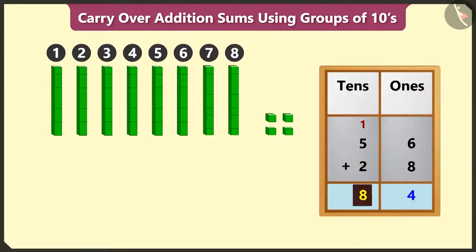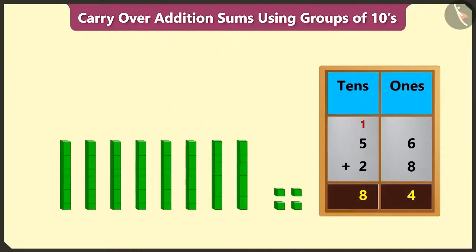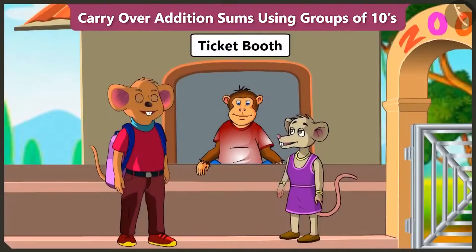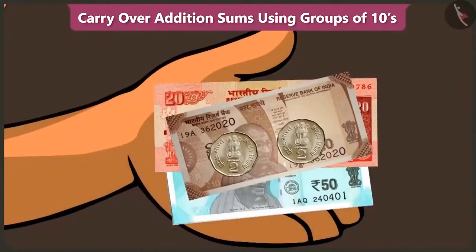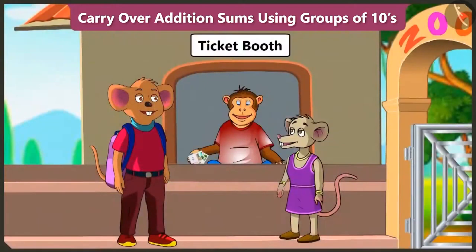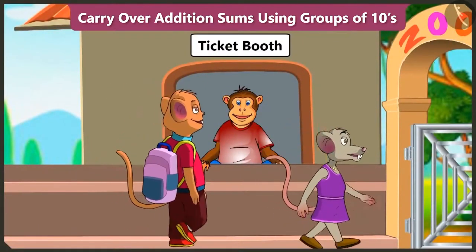Now, 8 tens and 4 ones, which means we have to give 84 rupees. Perfect answer — please take 84 rupees. Take your ticket. Let's go inside.